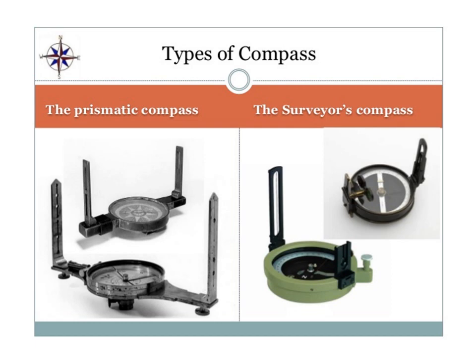Similarly, on the left part, we observe the surveyor compass. The surveyor compass is used to record the quadrantal bearings, and you can make use of the object vane as well as the eye vane to establish a line of sight. After establishing the line of sight, it is possible to read the reading directly from the top of the compass. Whatever angle you get will be recorded by considering the quadrant in which the particular needle lies — this is called the quadrantal bearing system.